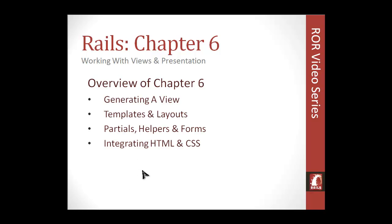Chapter six will be the V in MVC, which is the views — what your users, your website visitors, will see. It usually consists of HTML and CSS with some Ruby integrated into it. So we'll be generating a view, and we'll take a look at templates and layouts, partials, helpers and forms, and integrating HTML and CSS.